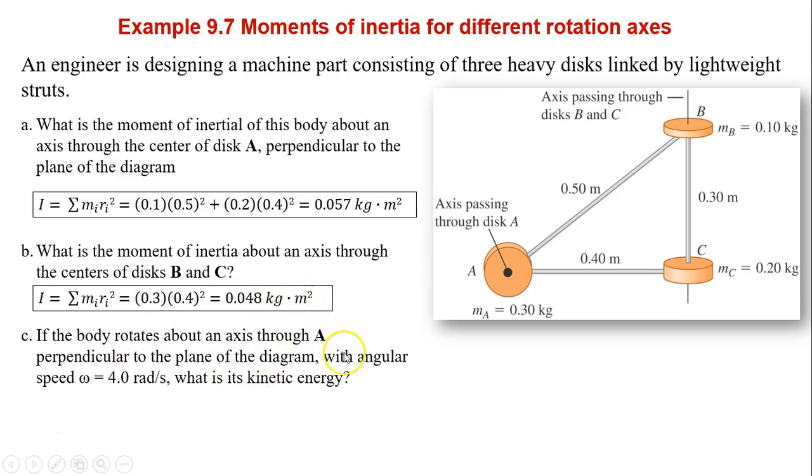If the body rotates about the axis through A perpendicular to the plane of the diagram with angular speed omega equals 4 radians per second, what is its kinetic energy? Kinetic energy equals 1/2 I omega squared. What is I? You have to look at the moment of inertia around A, which is 0.057. So that's the one you need to use times omega squared. So you have 0.46 joules.